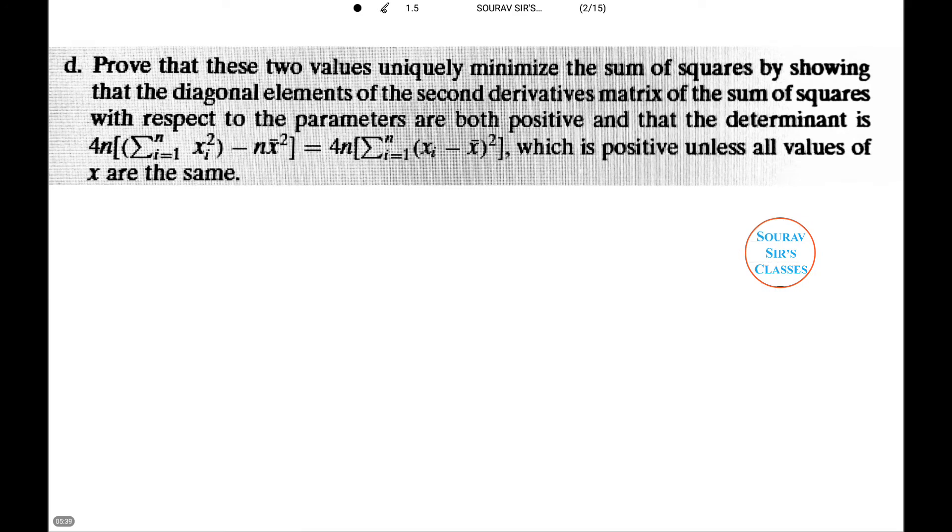Now, we need to prove that these two values uniquely minimize the sum of squares by showing that diagonal elements of the second derivative matrix of the sum of squares with respect to the parameters are both positive and the determinant is positive unless all values of x are the same.